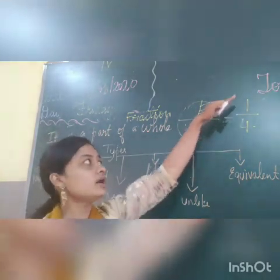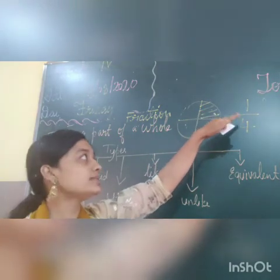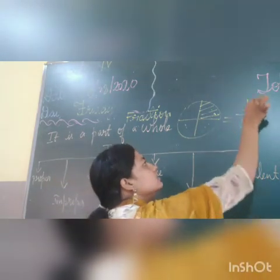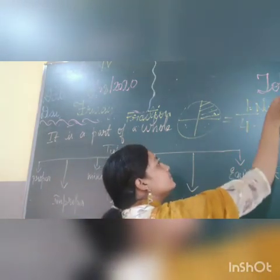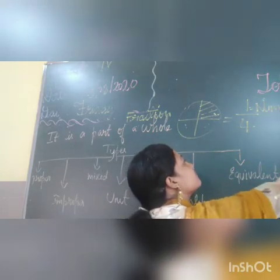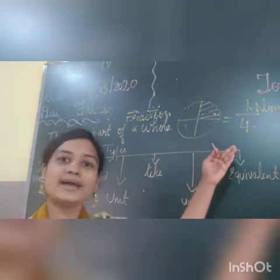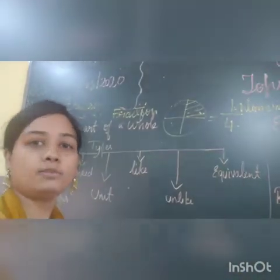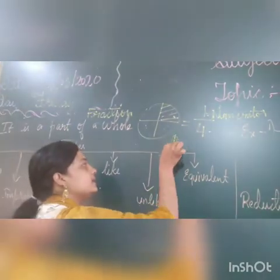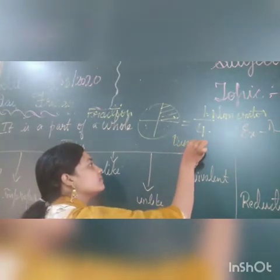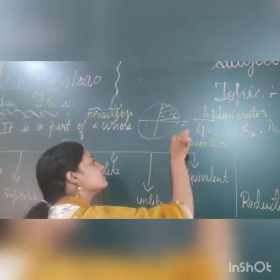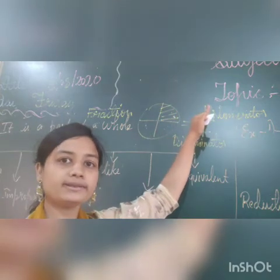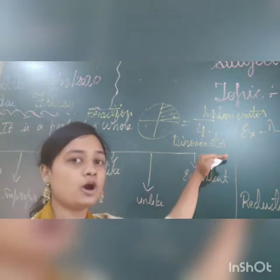If you see here, you have a number up and a number down. The number up is called the numerator. The number which we write down is called the denominator. The number up tells how many parts we take away, and the number down is the total number of parts.